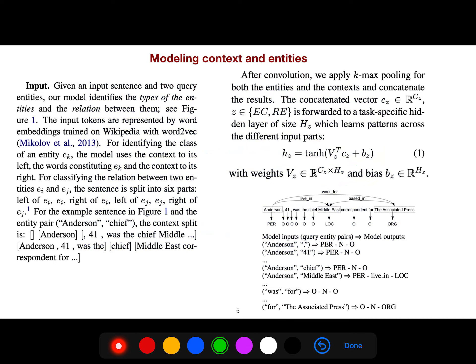Given an input sentence and two query entities, the model identifies the types of entities and relations. After convolutions, we apply k-max pooling for both the entities and the context, and concatenate the results.